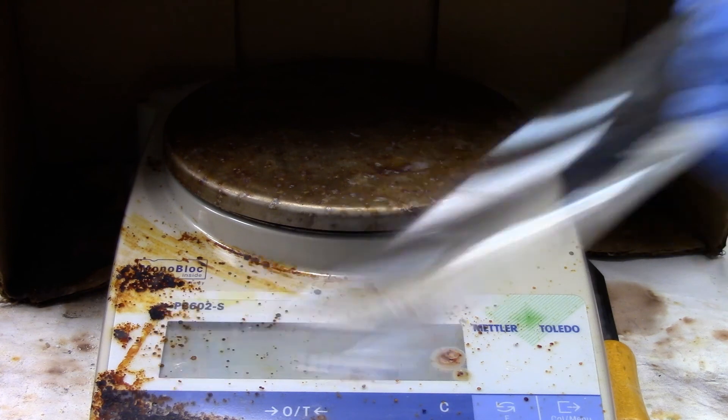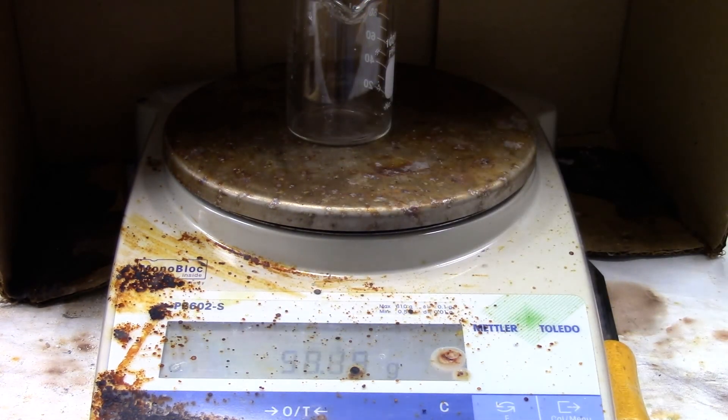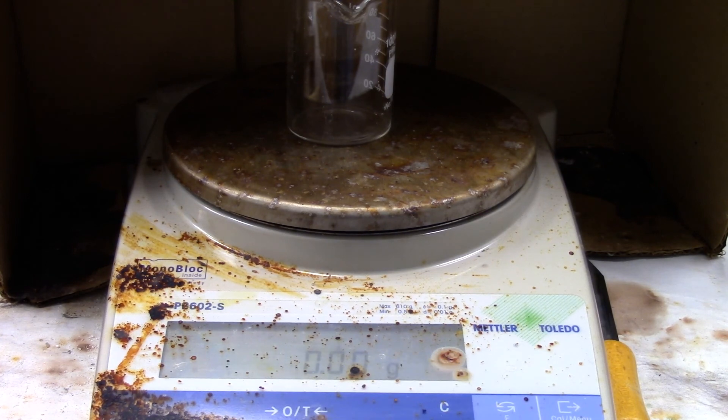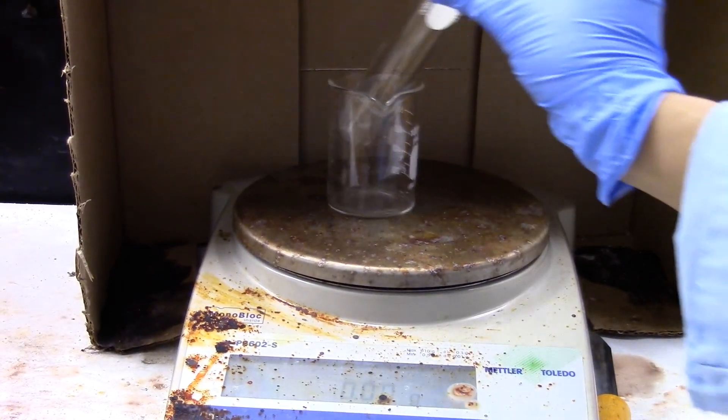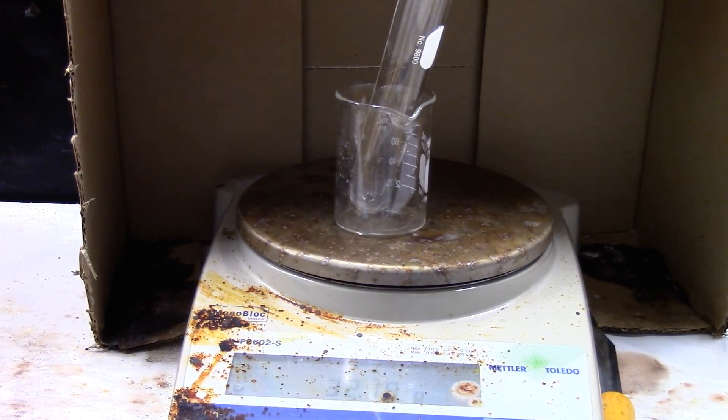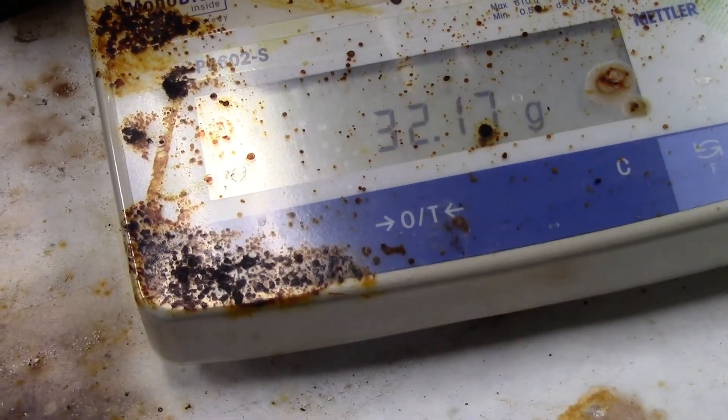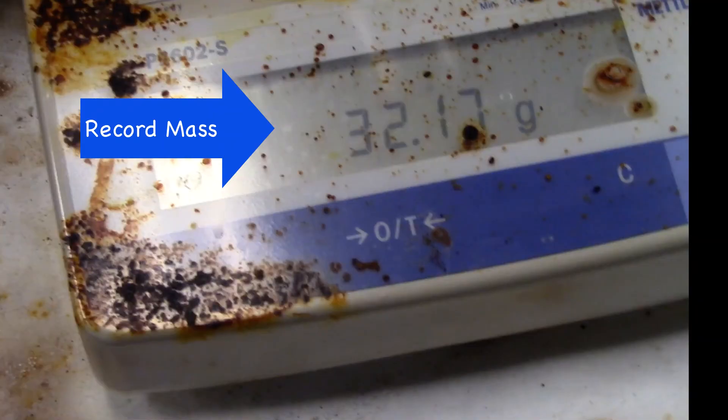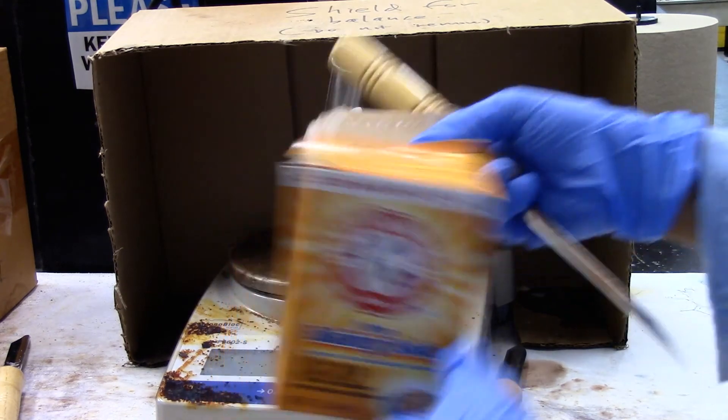So I'm going to weigh my empty test tube. For that I'm going to place a beaker, tare it, and then place my test tube in the beaker. Now I'm going to add some baking soda.